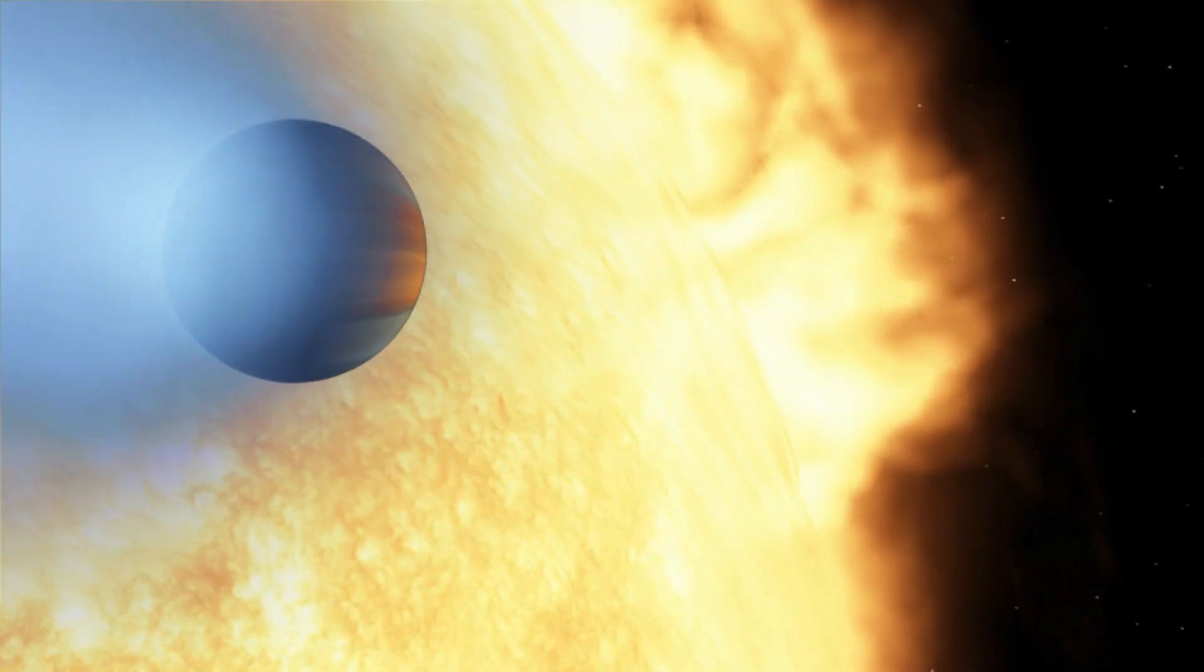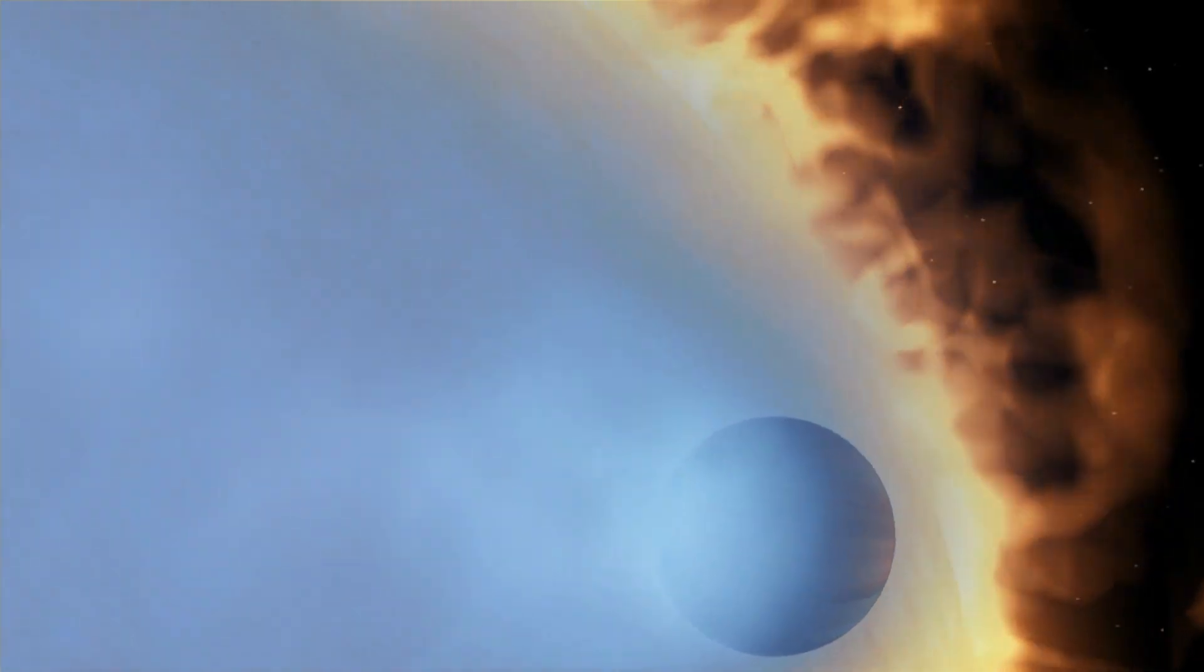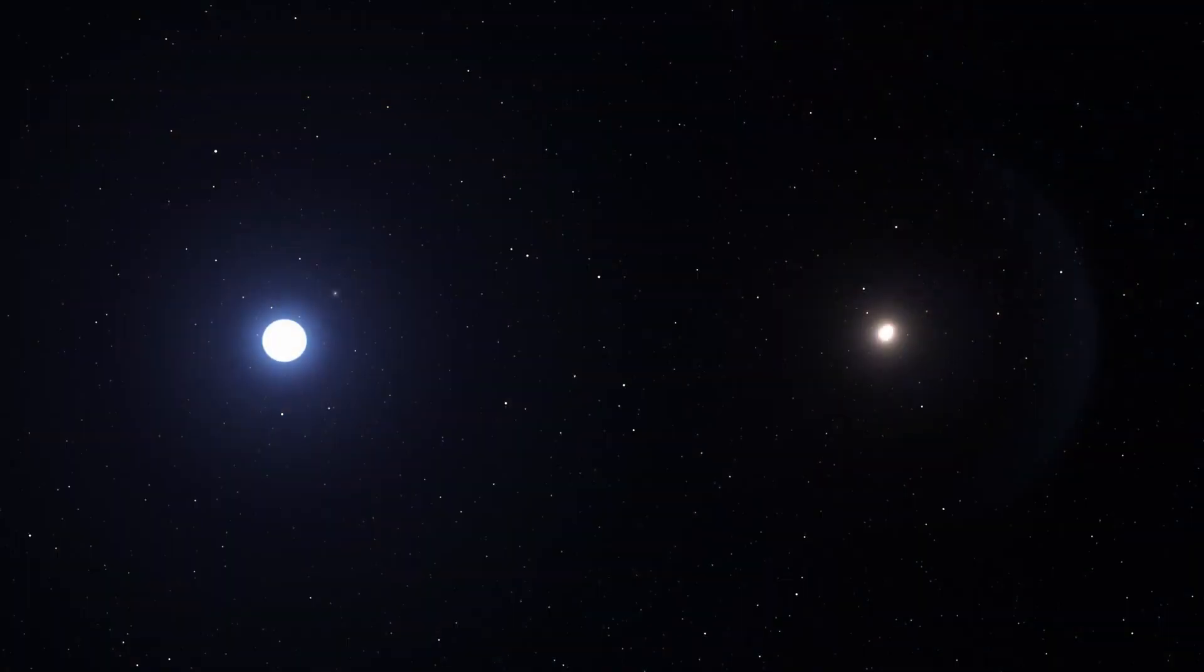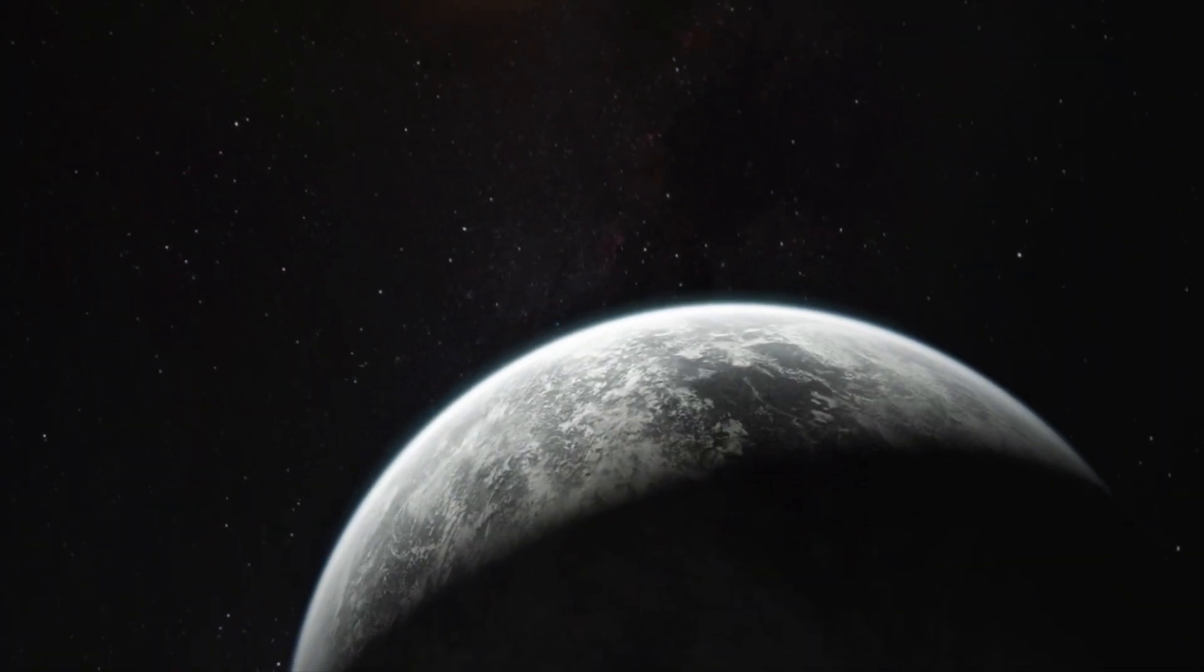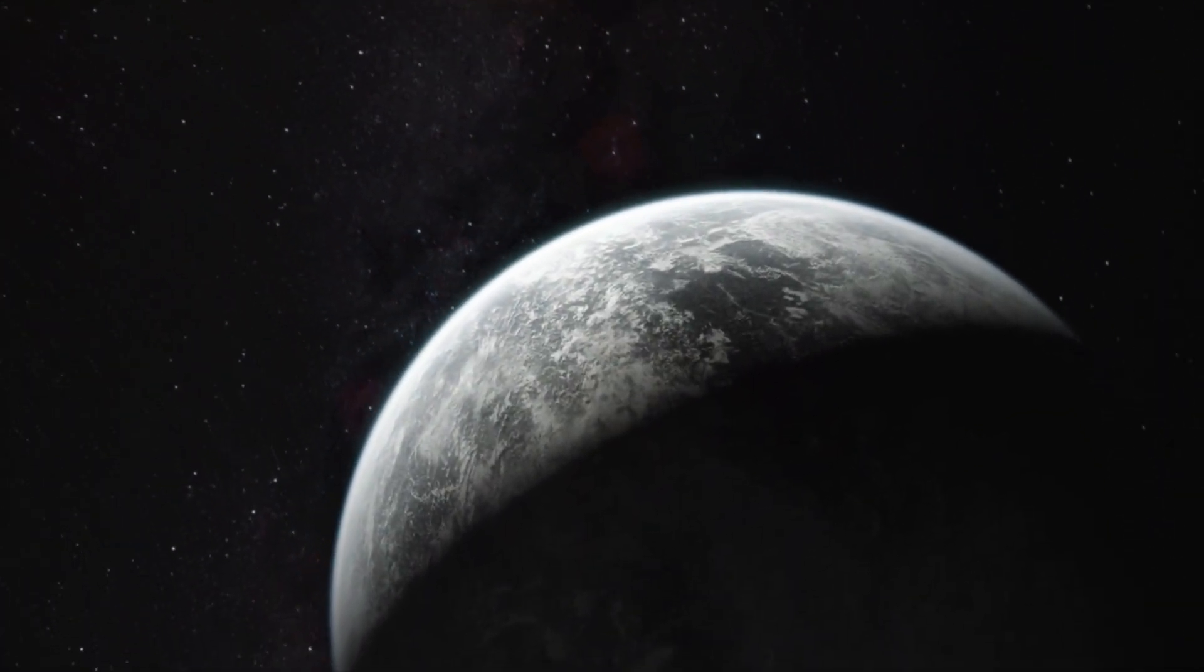Astronomers found giant gas planets so close to their stars that their atmospheres boil away into space. They found planets orbiting double-star systems. They found super-Earths ten times our own planet's mass.